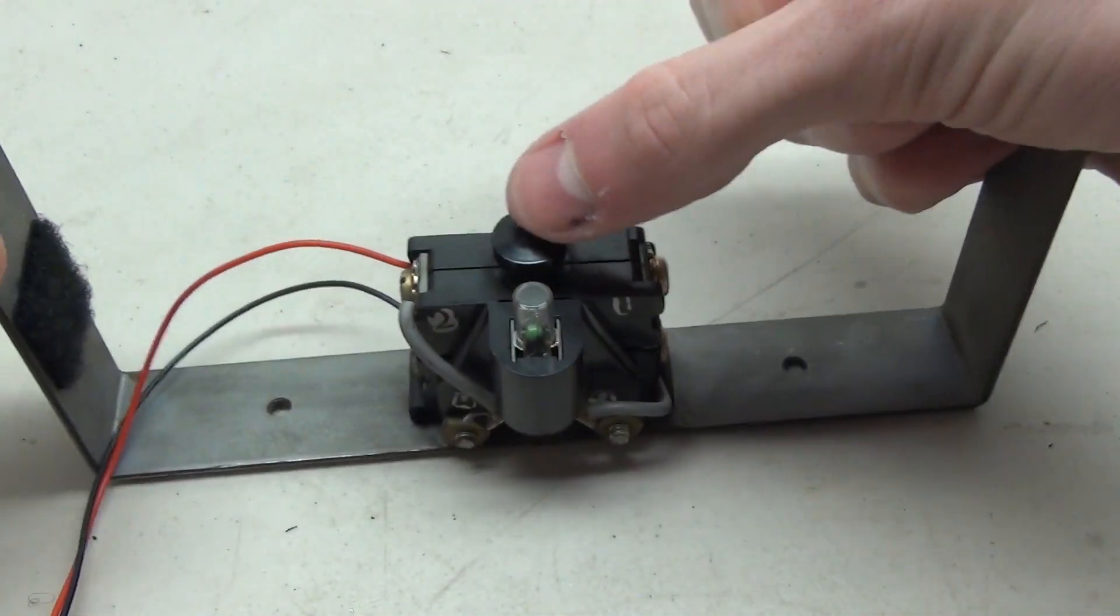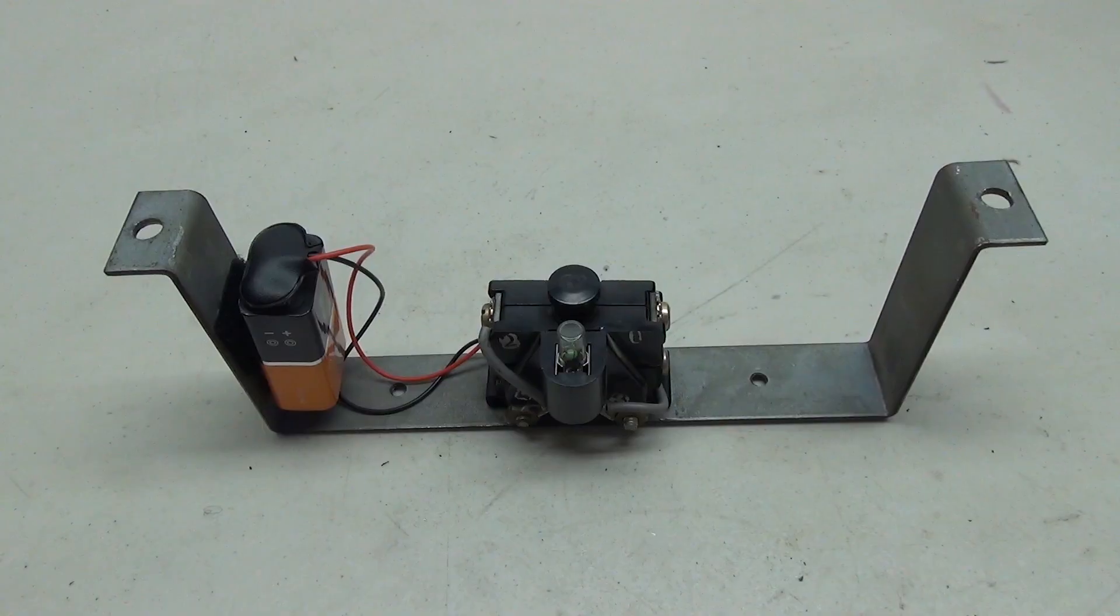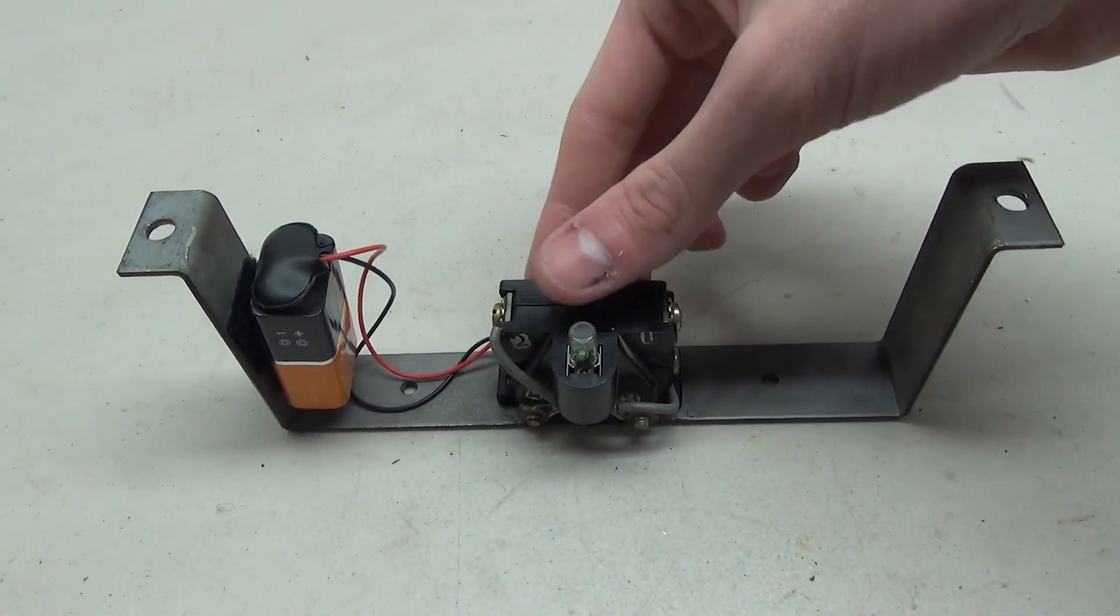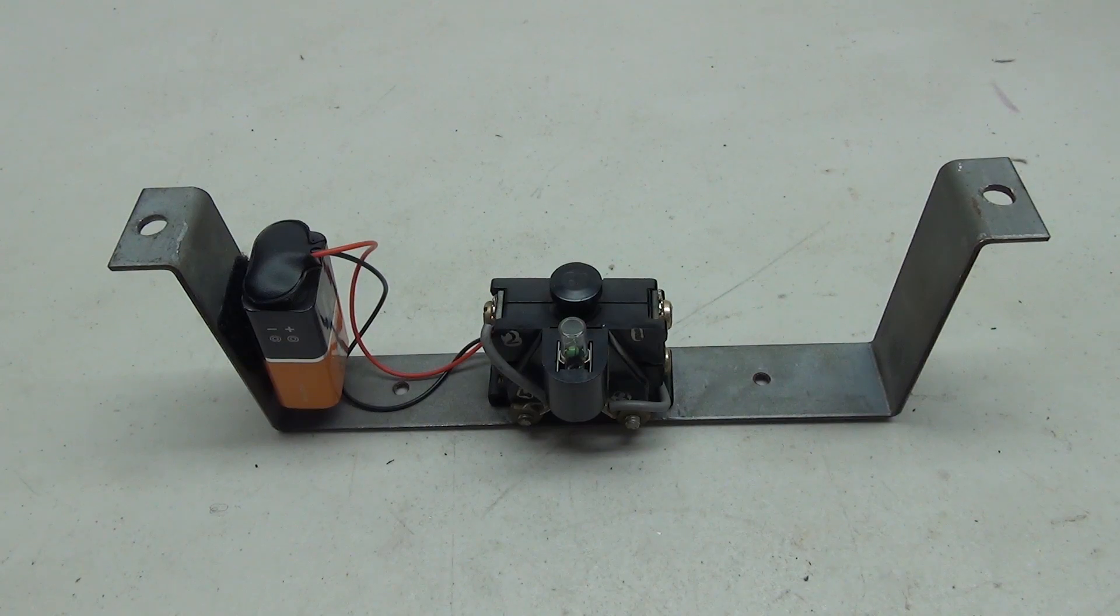There we go. So it lights up. Very simple circuit and very easy to make. And now I've stuck my 9 volt battery onto the piece of velcro, and all that's left to do is put the cover back on.